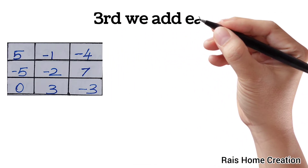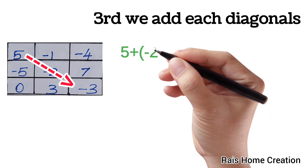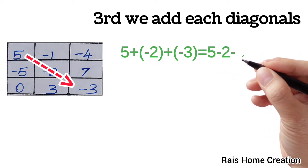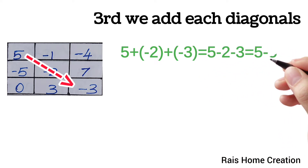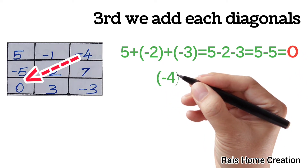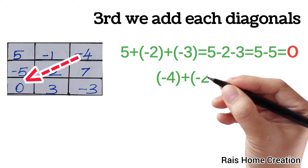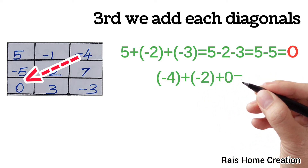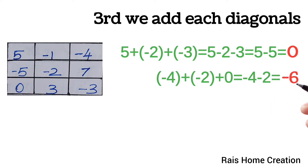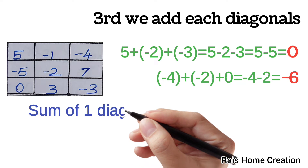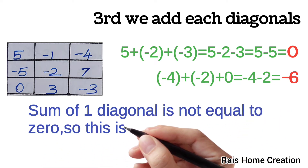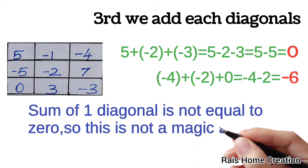Next, we add each diagonal. 5 plus minus 2 plus minus 3 equal to 5 minus 2 minus 3 equal to 5 minus 5 equal to 0. Minus 4 plus minus 2 plus 0 equal to minus 4 minus 2 equal to minus 6. The sum of one diagonal is not equal to 0, so this is not a magic square.